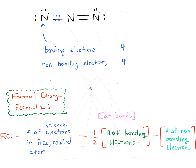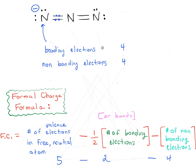These lone pairs are the non-bonding electrons. Plugging into the formal charge formula: we start with the number of valence electrons in a free neutral nitrogen atom, which is five. Then we subtract one-half times the number of bonding electrons — one-half times four equals two. A shortcut is to just count the number of bonds. We also subtract the non-bonding electrons, which is four. So five minus two minus four gives us minus one. The charge on this nitrogen is minus one, shown as a negative with a circle.